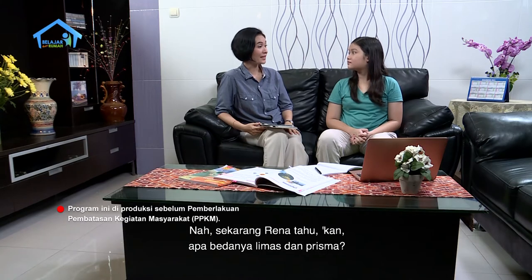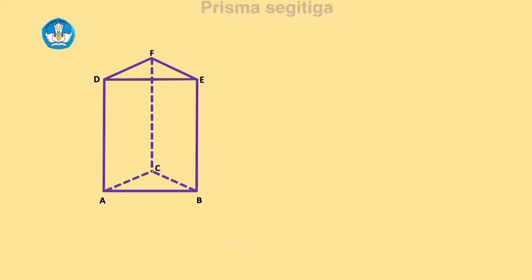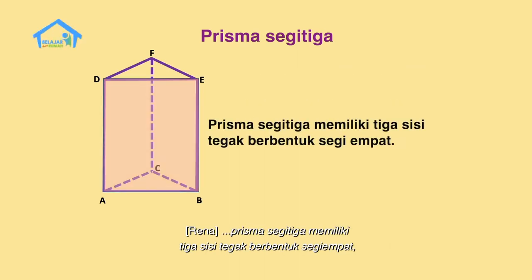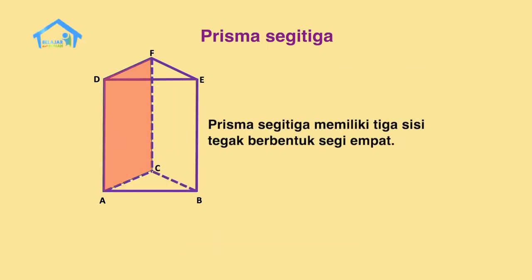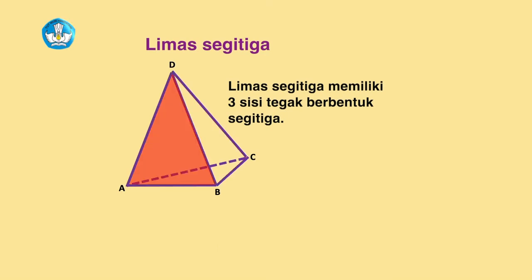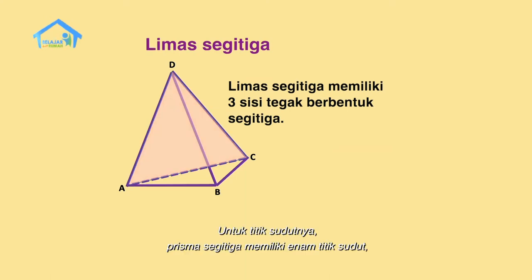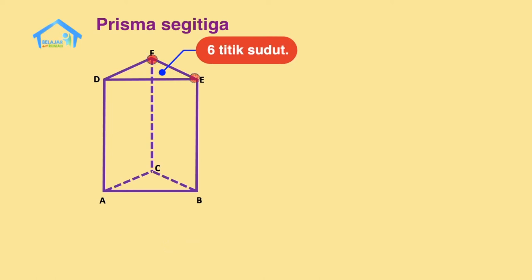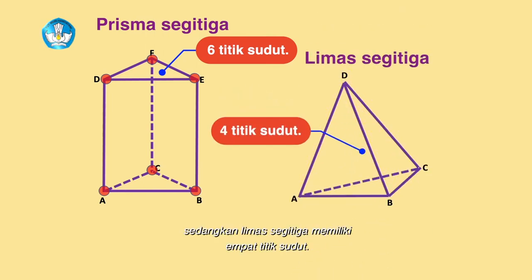Sekarang Rena tahu kan apa bedanya limas dan prisma? Ngerti bunda. Nah, selain itu perbedaannya apa lagi? Prisma segitiga memiliki tiga sisi tegak berbentuk segi empat. Sedangkan limas segitiga memiliki tiga sisi tegak berbentuk segitiga. Untuk titik sudutnya, prisma segitiga memiliki enam titik sudut. Sedangkan limas segitiga memiliki empat titik sudut.